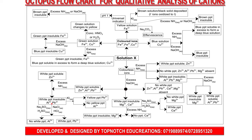Now we need to differentiate aluminum and lead. You can add aqueous sodium sulfate, aqueous sulfuric acid, dilute sodium chloride, or dilute HCl. Lead chloride and lead sulfate are insoluble salts, so adding a soluble chloride or sulfate will precipitate lead sulfate or lead chloride as a white precipitate. If you get a white precipitate, lead is present.